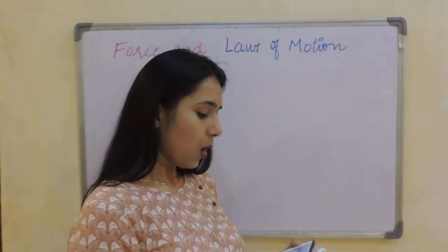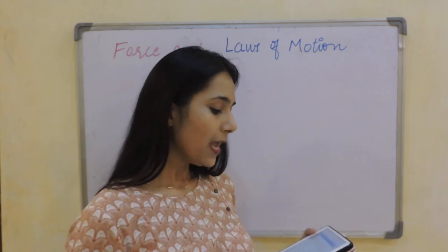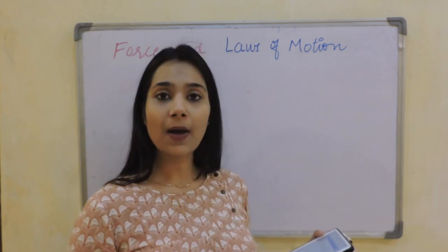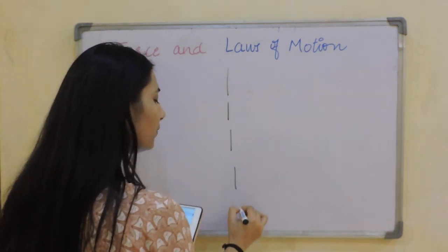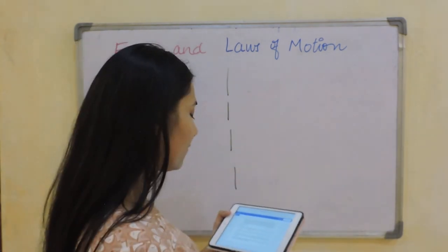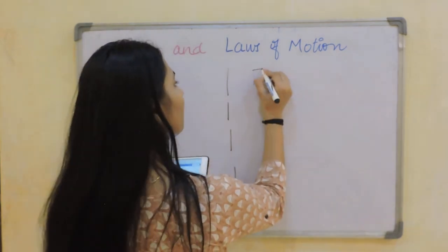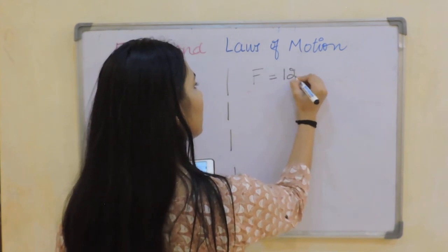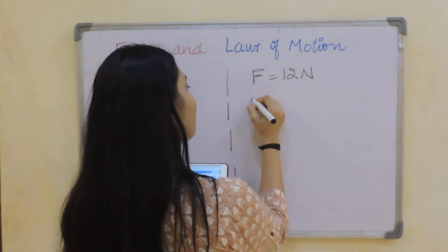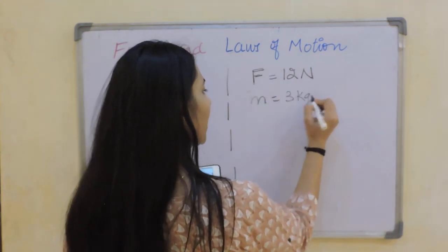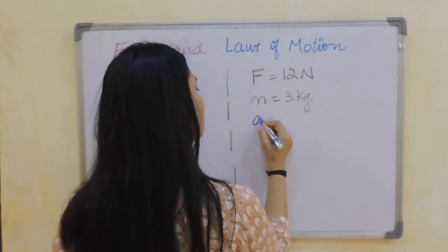My first question says: what is the acceleration produced by a force of 12 Newton exerted on an object of mass 3 kg? While I am solving it, you also solve it along with me. The force I have is 12 Newton, acting on an object of mass 3 kg. I need to find the acceleration.